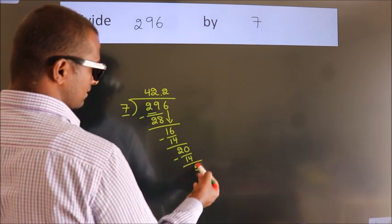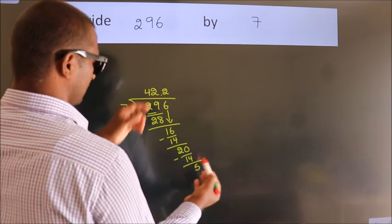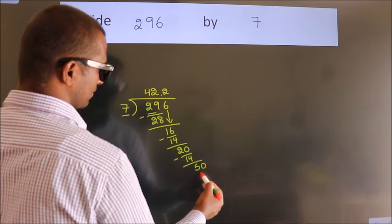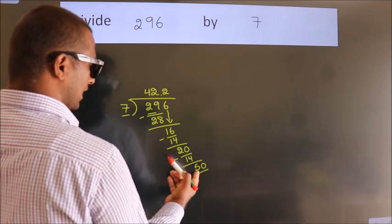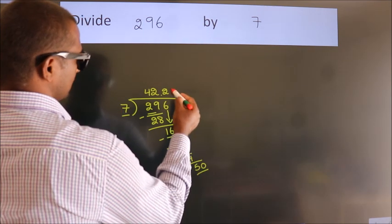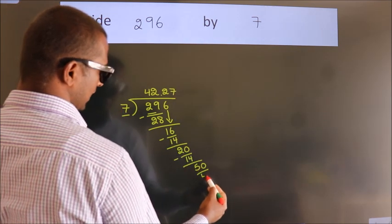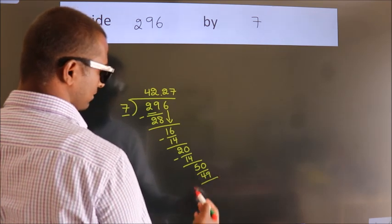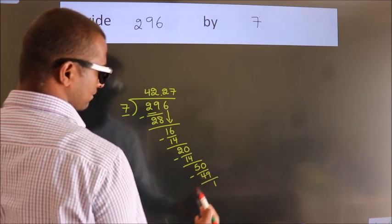After this, we already have the decimal. So directly take 0. So 50. A number close to 50 in the 7 table is 7 sevens, 49. Now we subtract. We get 1.